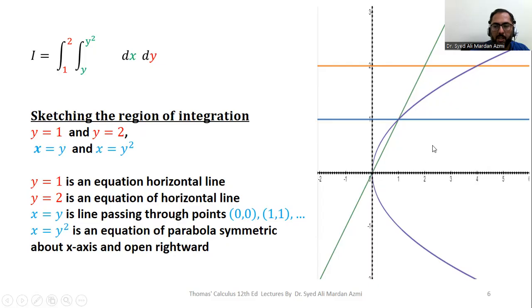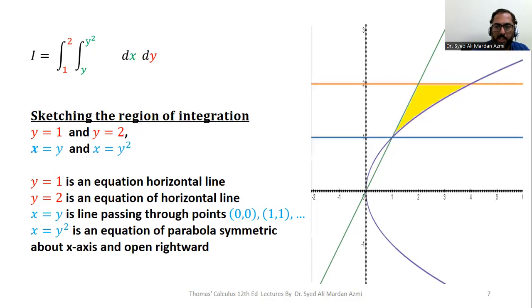Now, this will be the second closed region. You can see this portion. This portion involves the parabola, x equal to y squared, the green line x equal to y, this blue line y equal to 1, and this orange line y equal to 2. So, as this closed region involves all the four boundaries, this region will be our region of integration.